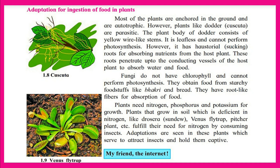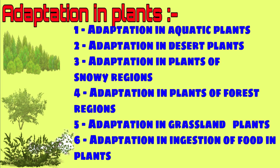Plants that grow in soil which is deficient in nitrogen — like Drosera, Venus flytrap, and pitcher plants — fulfill their need for nitrogen by consuming insects. Adaptations are seen in these plants which serve to attract insects and hold them captive. So in this way, the first part of this chapter is completed.